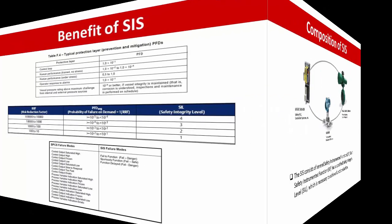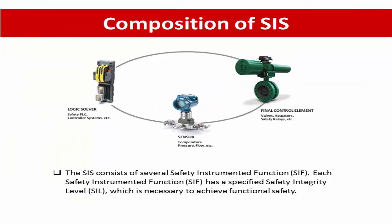Composition of the SIS: the SIS consists of several Safety Instrumented Functions, or SIFs. Each SIF has a specific Safety Integrity Level, or SIL, which is necessary to achieve the required safety function. Each SIF is composed of a sensor, logic solver, and final element, as shown in the picture. This is the basics of the SIS. We will look at the details of the shutdown function in the next slide. Thank you for watching, and see you in the next video.